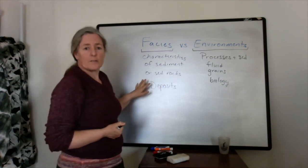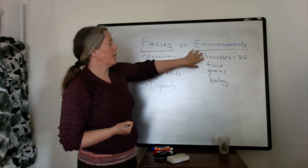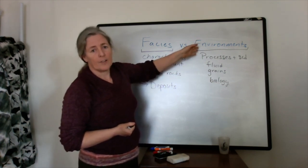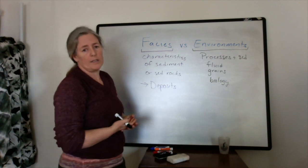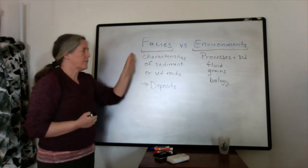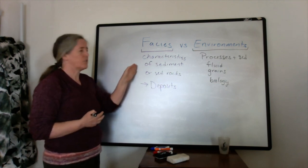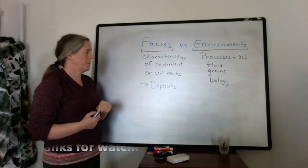than actually gets preserved in the rock record. You can have an erosional environment, and the only thing left behind would be an unconformity. You can't really have a facies that consists just of an unconformity because it actually has to have some volume of rock.